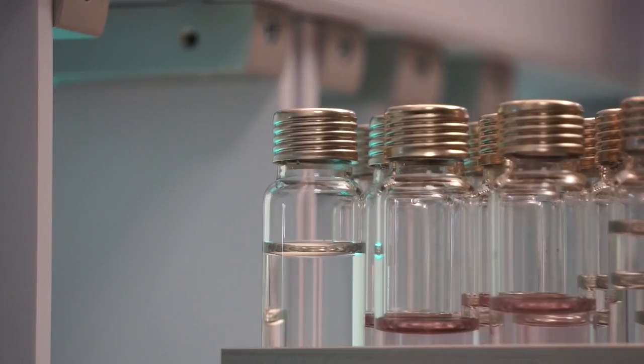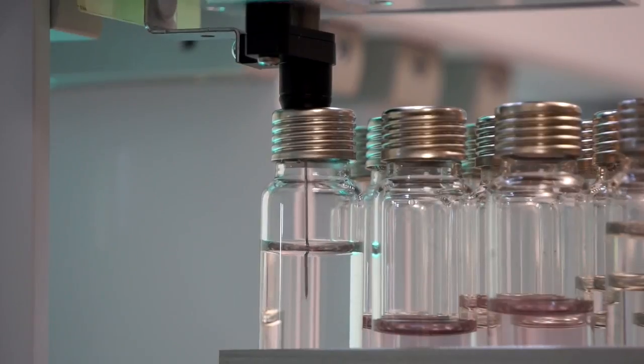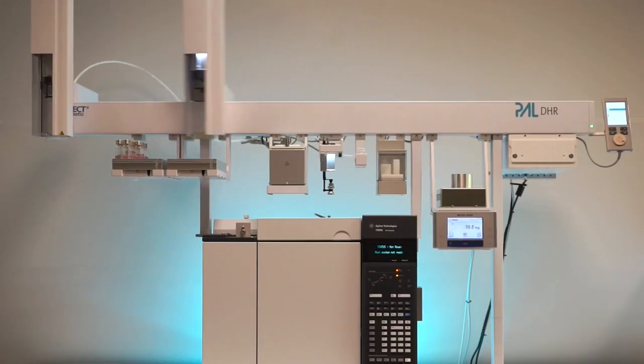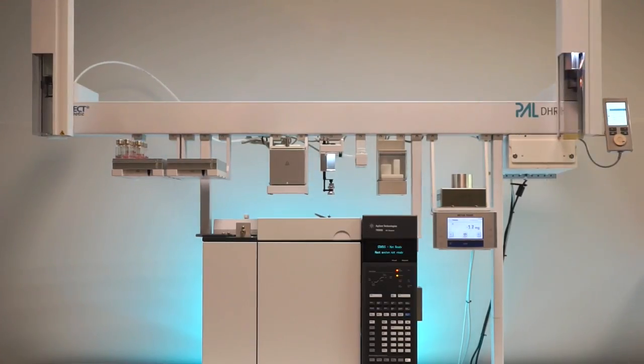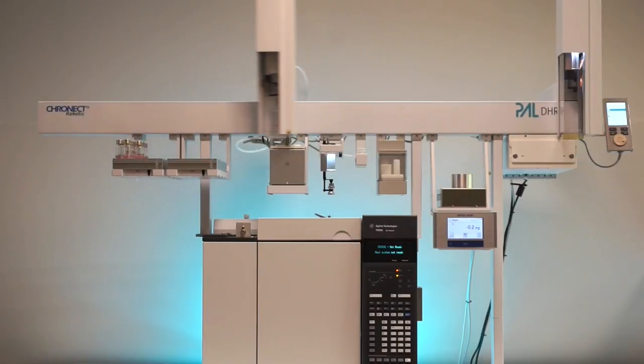The internal standard is injected into the 20ml sample vial. The vial is transported to the vortexer where the sample with the added standard is homogenized.